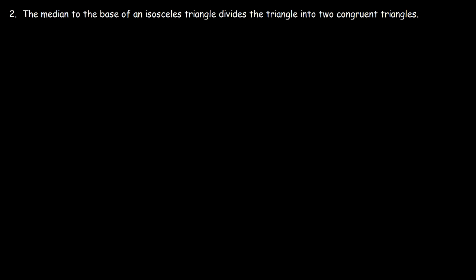Here's a practice problem: the median to the base of an isosceles triangle divides the triangle into two congruent triangles. Go ahead and work on it. Let's start with a triangle — once again we'll call it triangle ABC. There's a median, so we draw a line and add another point, which we'll call point D.